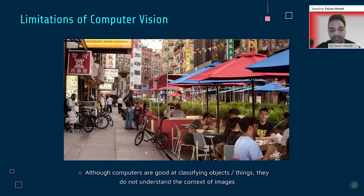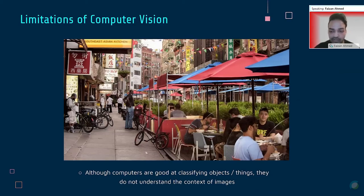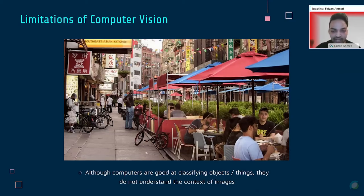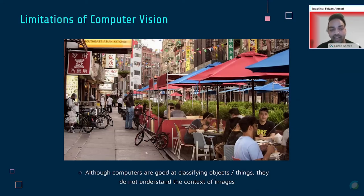One of the biggest current research areas within computer vision is focused on understanding the context of images. CNN models don't understand what is actually going on in images — they can only classify the things within them. When we look at a picture, we can see people eating, talking, and infer we're likely in Chinatown from the signs. A CNN model is not able to understand these things — it doesn't have common sense. If two people are looking at each other, we know they're likely talking, but a CNN cannot determine that. Researchers are working on helping computers gain a high-level understanding of what is actually going on in an image.